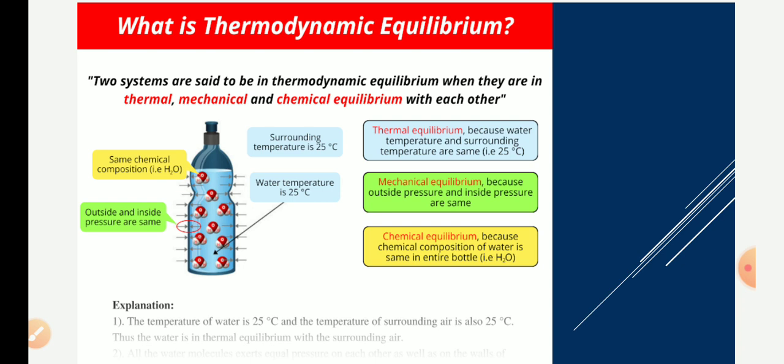Any system which is in thermal, chemical, and mechanical equilibrium is said to be in thermodynamic equilibrium. The bottle contains all three — thermal, mechanical, and chemical equilibrium — so it is treated as thermodynamic equilibrium. Any system that possesses all three is said to be in thermodynamic equilibrium.